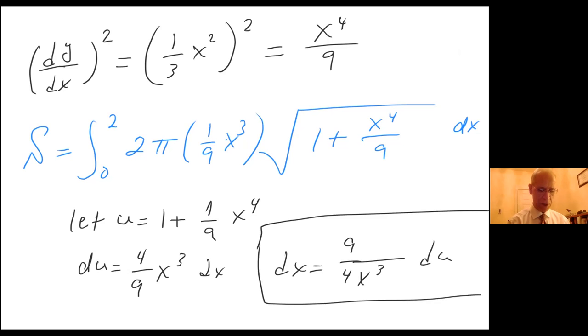So now I have to change the boundaries. We are using u substitution. When x equals zero, u equals 1, and when x equals 2, u equals 25 over 9.